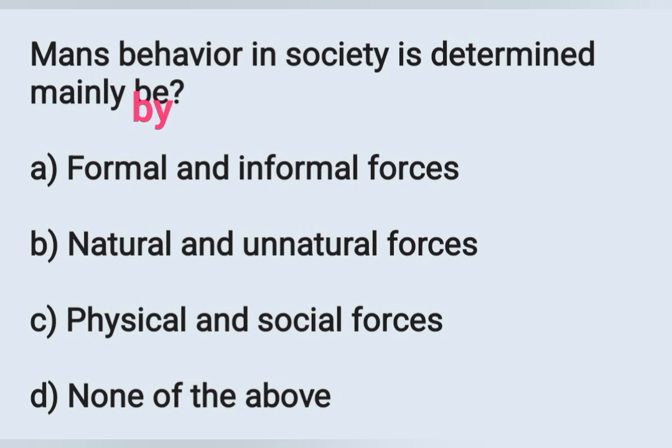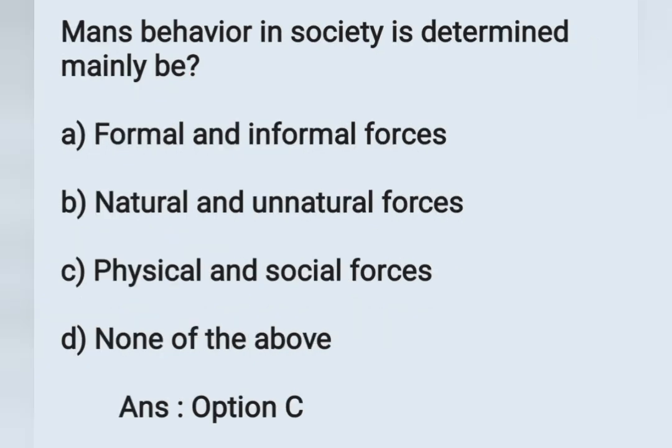The next question: man's behavior in society is determined mainly by — Options: A) Formal and informal forces, B) Natural and unnatural forces, C) Physical and social forces, D) None of the above. Man's behavior in society is determined by physical and social forces. Option C is the correct answer.